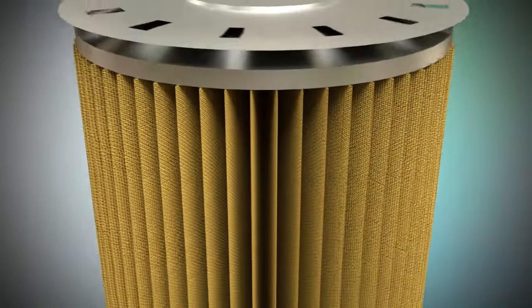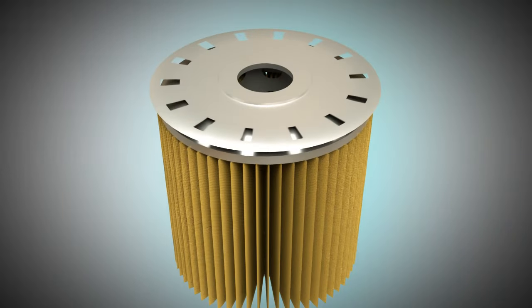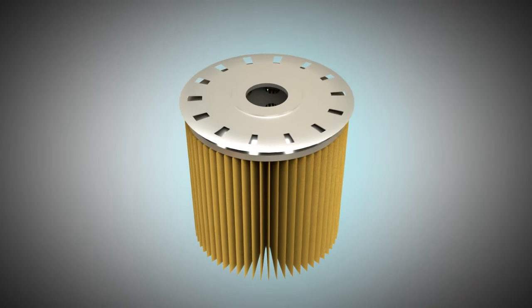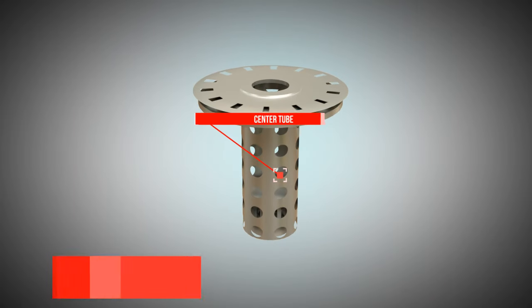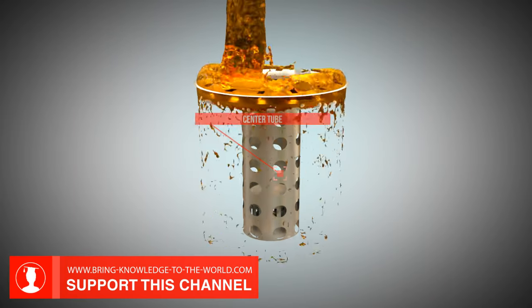The oil flows from the outside into the oil filter, then runs through the filter, which is made invisible here, and flows through the center tube. Then, the oil flows upwards.